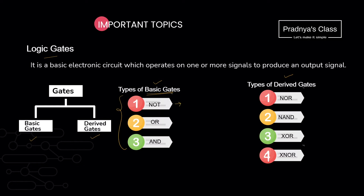NOT gate works on a single input and it negates the value. If input is 1, it will be 0; if it is 0, it will be 1. NOT gate is represented by a triangle with a bubble on it. When we label the gate, if the input variable is x, the result we will write as x-bar.